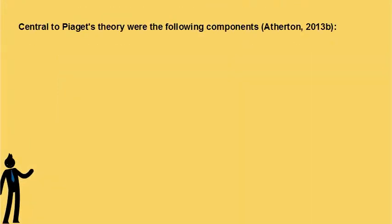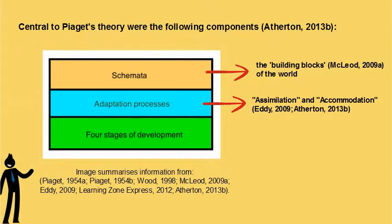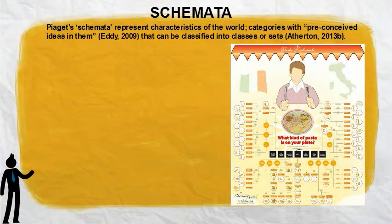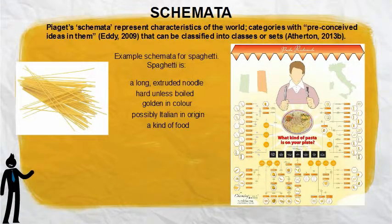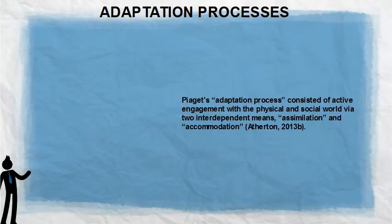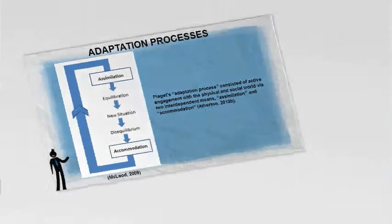Central to Piaget's theory were the following components: schemata, adaptation processes, and the four stages of development. Piaget's schemata represent characteristics of the world — categories with preconceived ideas that can be classified into classes or sets. His adaptation process consisted of active engagement with the physical and social world via two interdependent means: assimilation and accommodation.